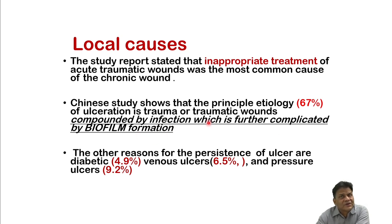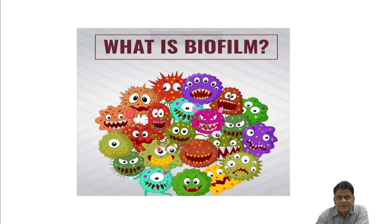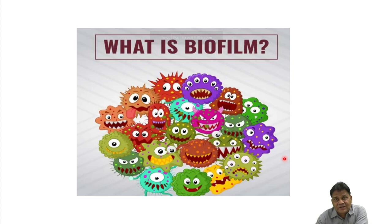Infection followed by biofilm formation is the most critical issue. Biofilms are resistant forms of bacterial aggregates where antibiotics are essentially helpless — even when sensitivity is shown in vitro, they cannot do much in vivo. You can see the amalgamation of many types of bacteria in different colors and shapes, living in a multicellular form to protect themselves from outside threats.